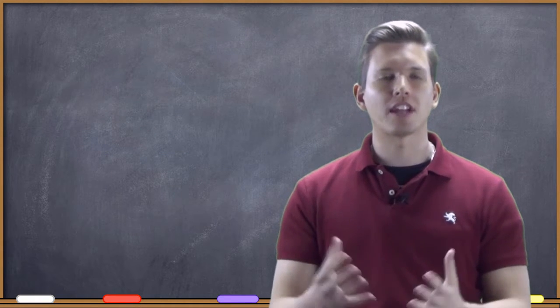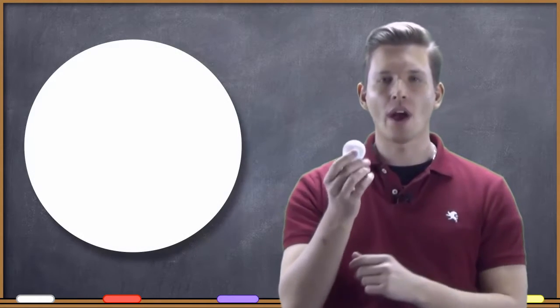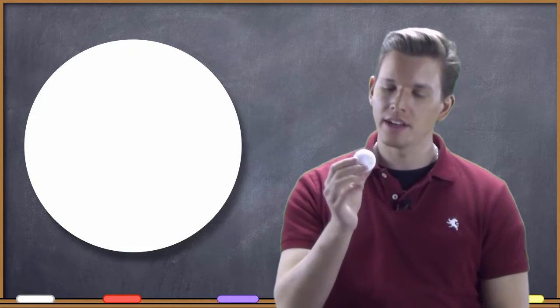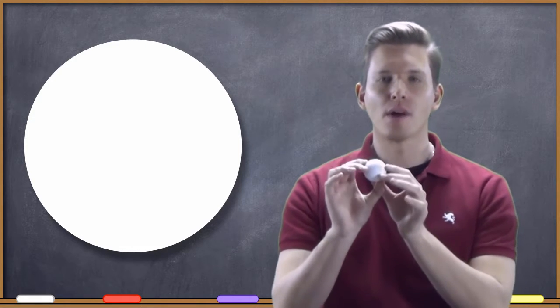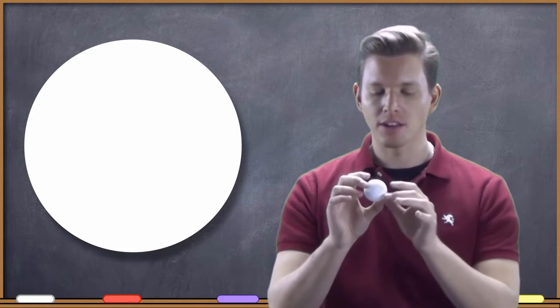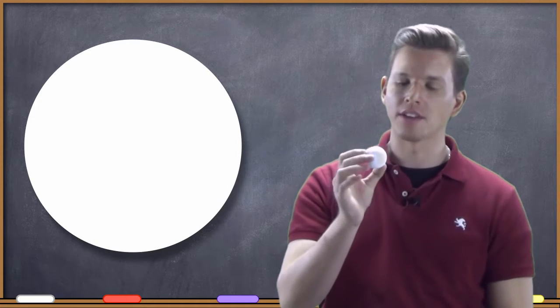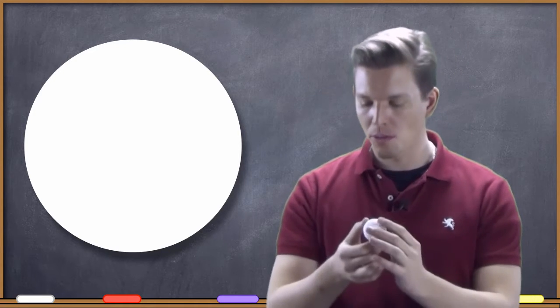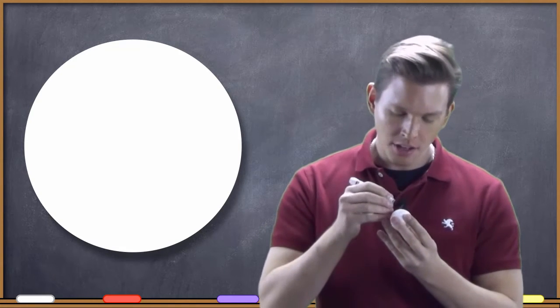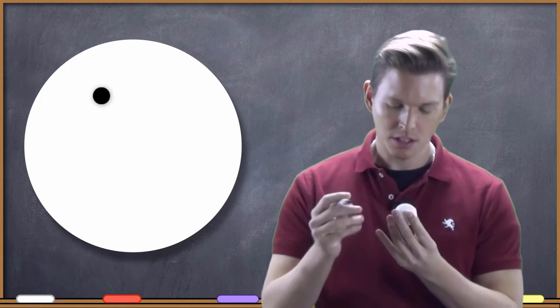Here's the thought experiment that I want to conduct with you. I have this white ball, and for the purposes of our thought experiment, I want you to imagine that this is a perfectly homogenous white ball. I've got it painted white, but just imagine that it's perfectly homogenous in every way. And what I'm going to do is, I'm going to take this marker and put one black dot on this ball.